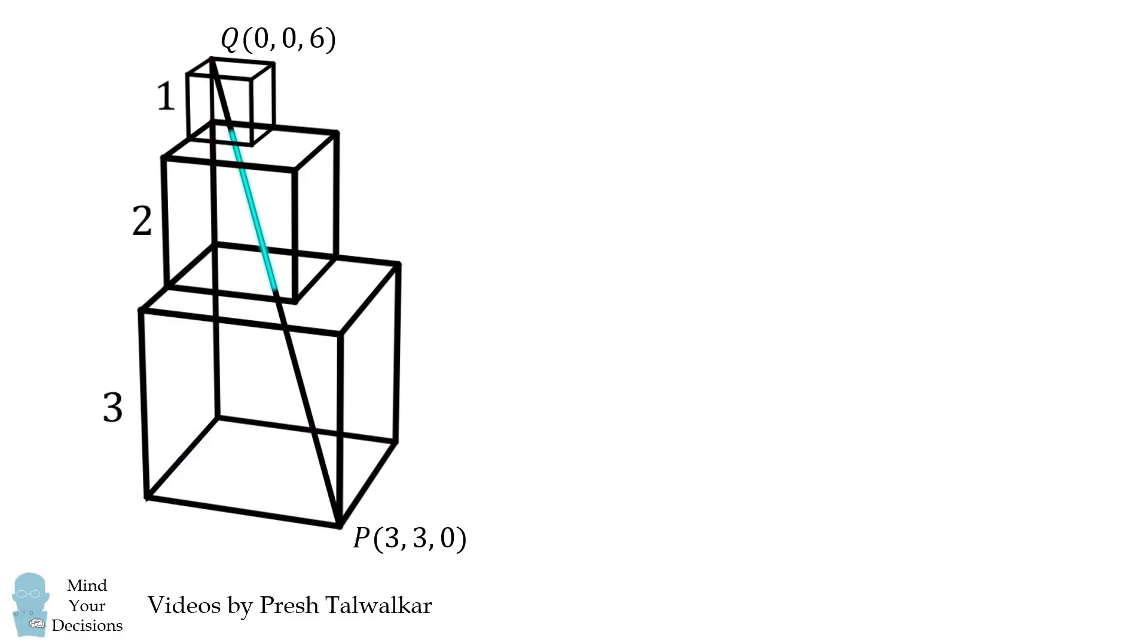We will first describe the vector PQ that goes from the point P to the point Q. By subtracting the relevant points, we get that PQ is equal to (-3, -3, 6). We can then describe a parametric equation for the line going through PQ by adding the point P plus T times the vector PQ. We then add coordinate by coordinate to get the following equation.